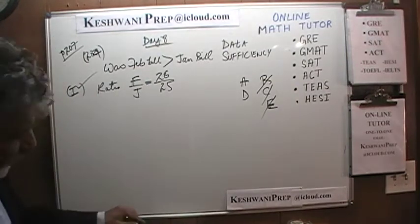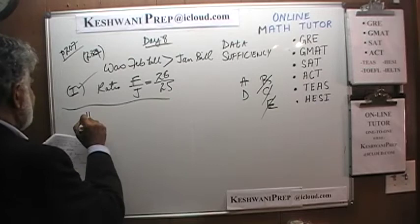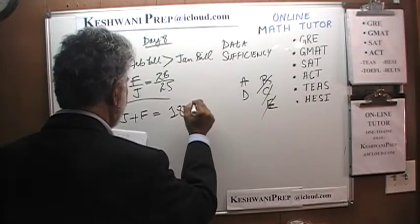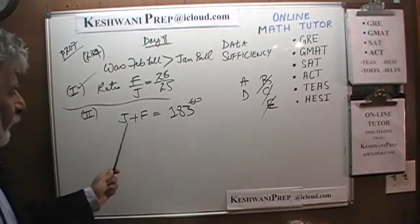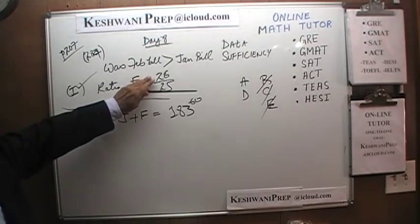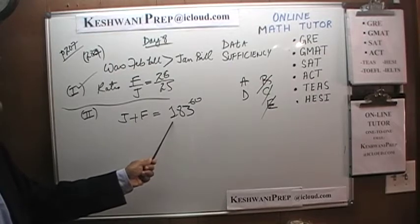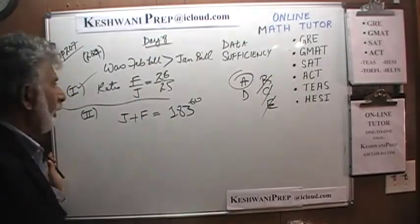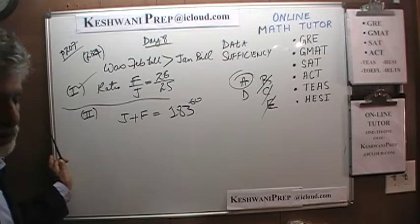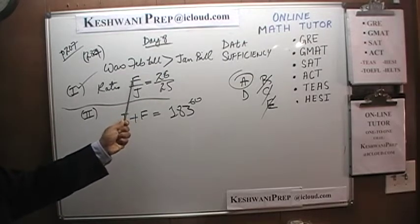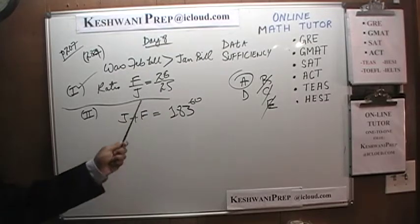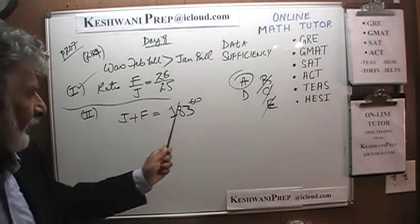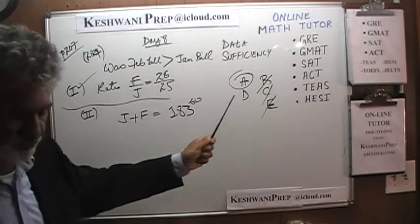The second statement tells us that the January bill plus the February bill equals $183.60. Simply knowing the sum of the two bills cannot tell us which bill was higher. The second statement by itself is not enough. Therefore the answer is A. What they hope you'd do is substitute 25F equals 26J into the sum and conclude you need both statements — but you do not. The first statement alone is sufficient.